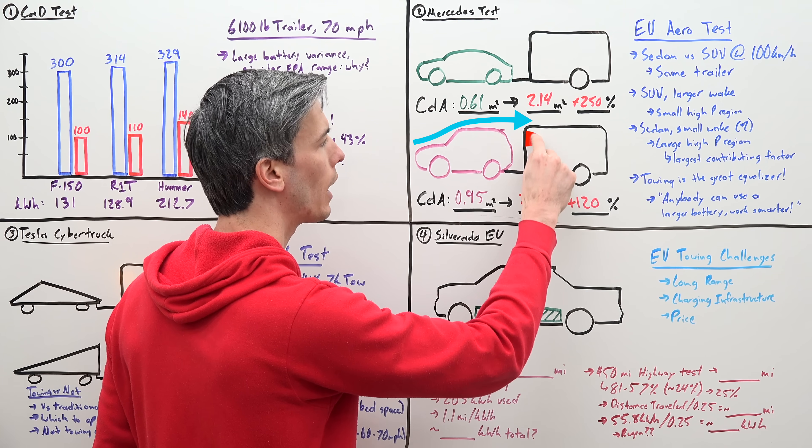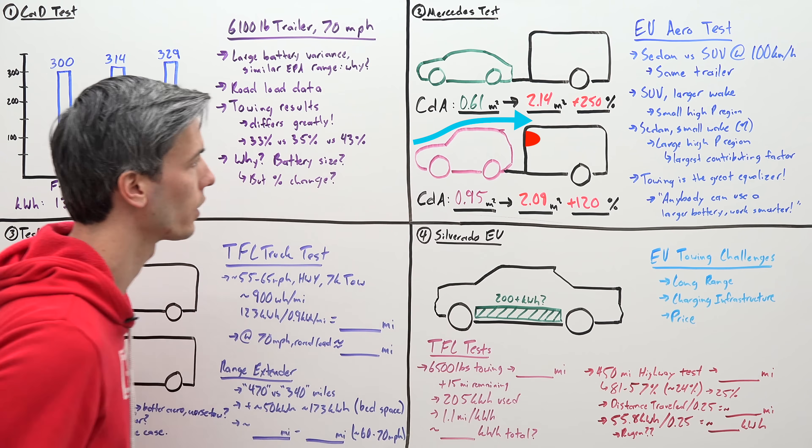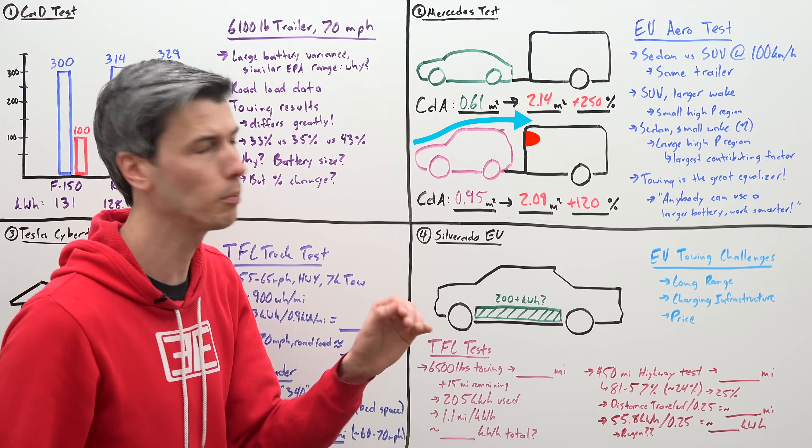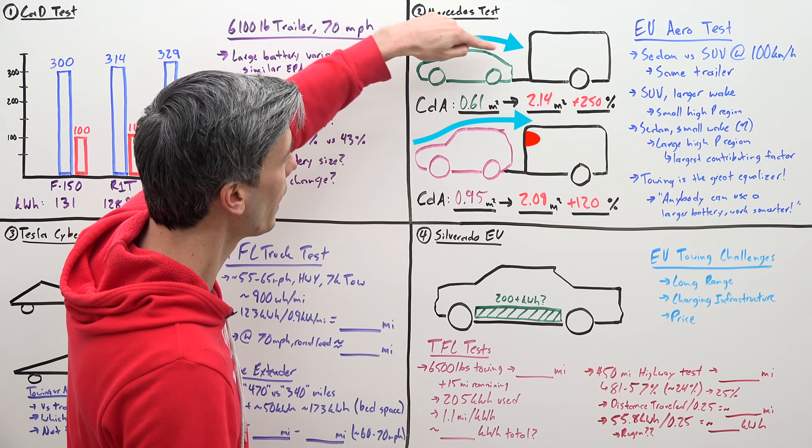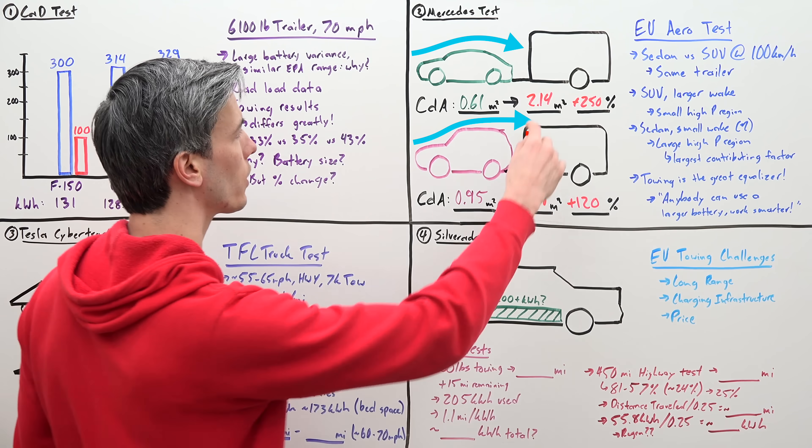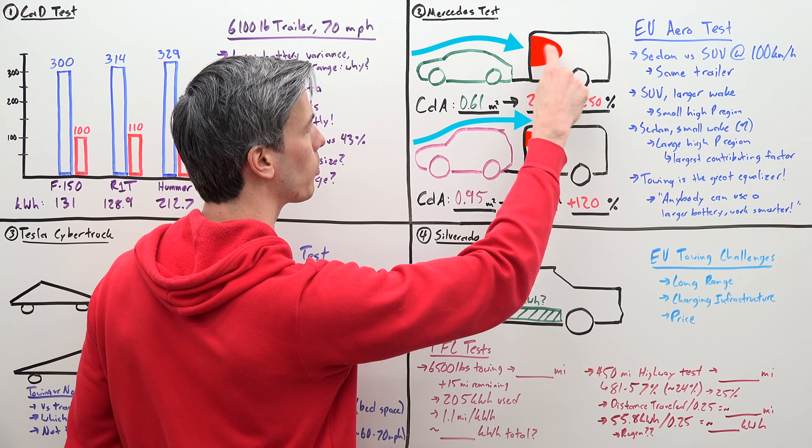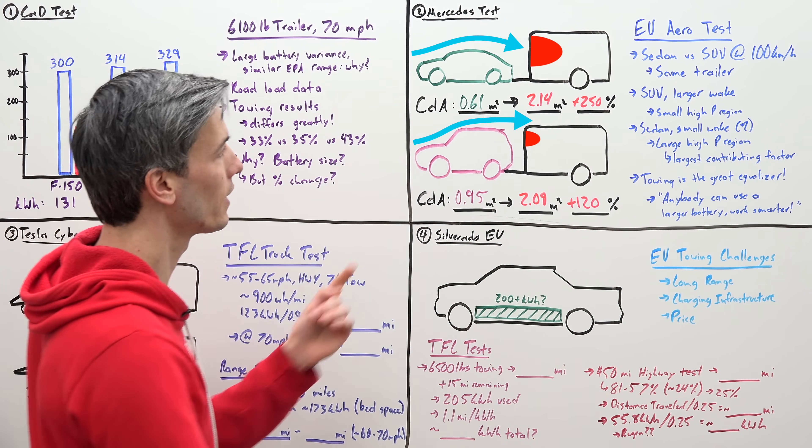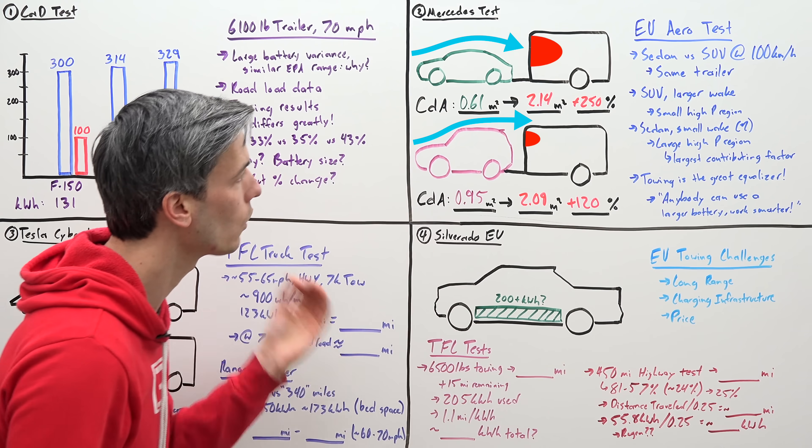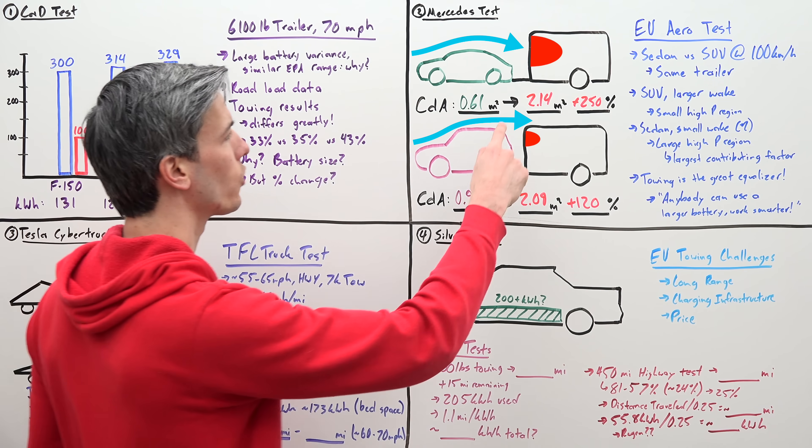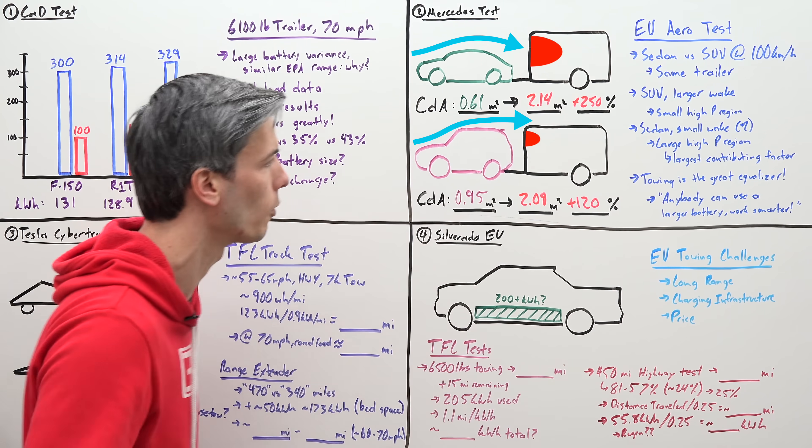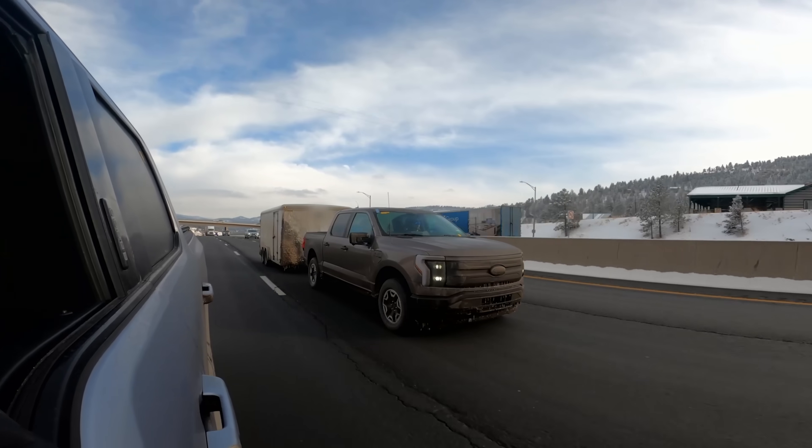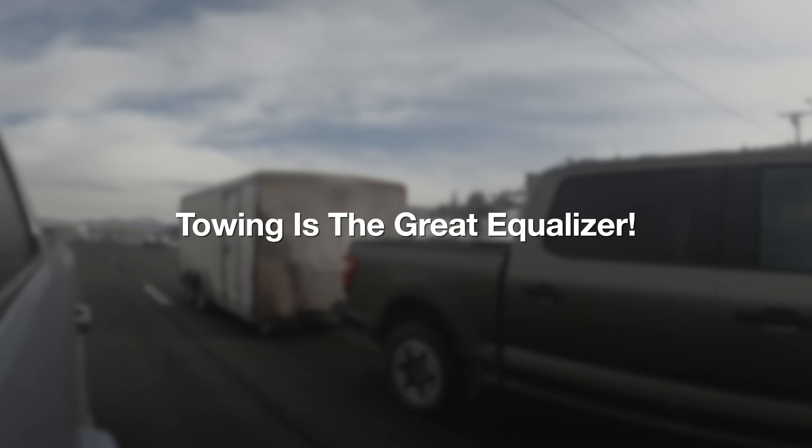So you have a small high pressure region on the front of this trailer versus the sedan, which has a small wake, a lot of that airflow coming up and back down over and then ramming into the front of this trailer. It creates a large high pressure region on the front of that trailer. And in Mercedes study, they found that that high pressure region was the largest contributing factor as to why that CDA increased so much.